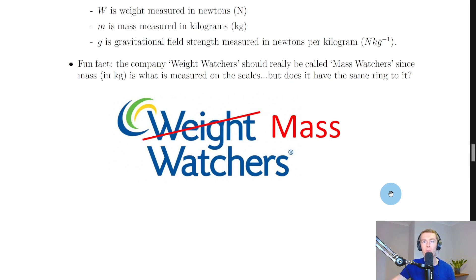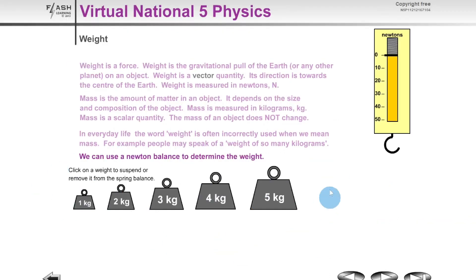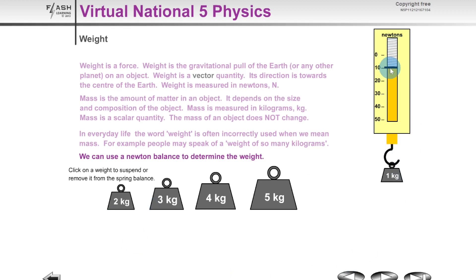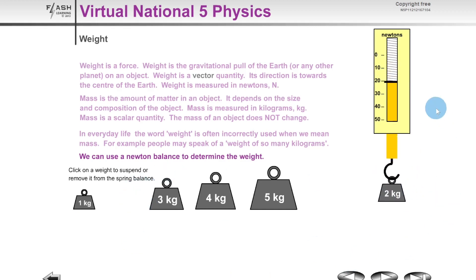Now let's look at a quick simulation to help understand the difference between mass and weight. We have a range of masses from one kilogram to five kilograms, and on the right a Newton balance, which can measure forces. It's set to zero Newtons right now, but if we put a one kilogram mass on the Newton balance, we get just under 10 Newtons.